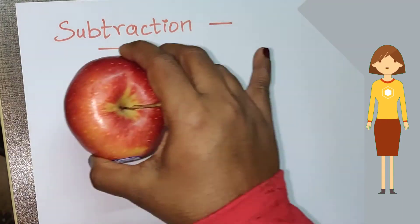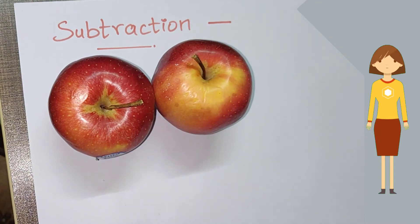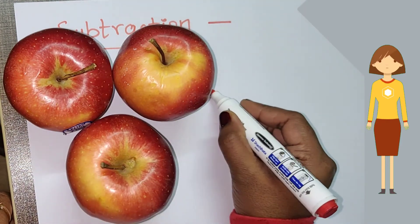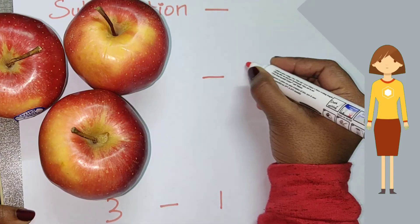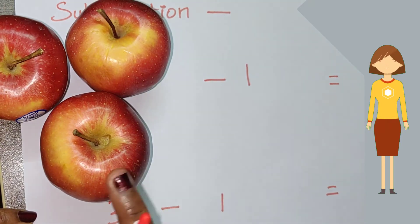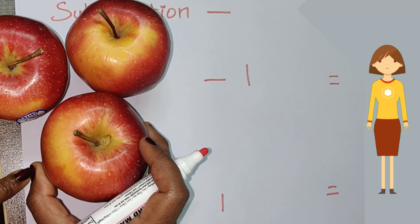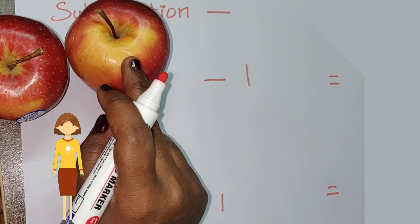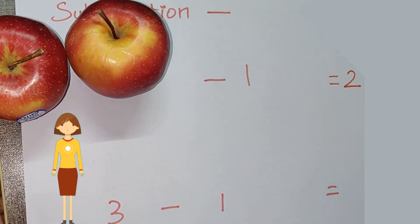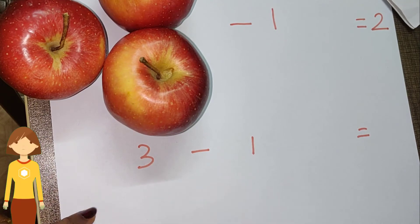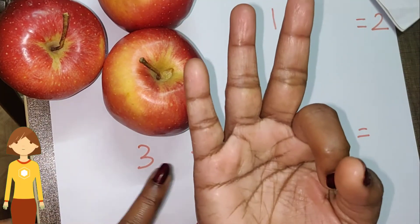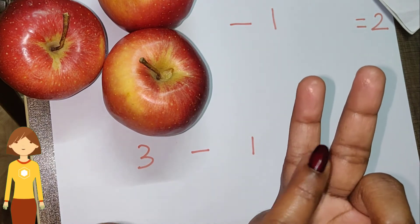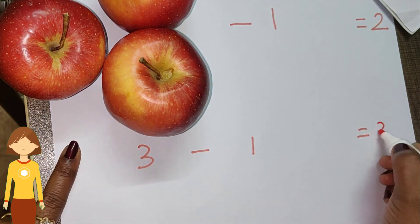Let me give an example. I am taking three apples — one, two, three. I have to minus one from that. If I take off one apple, how many apples are remaining? One, two. Only two apples are there, so the answer is two. The same way with fingers: I am closing one finger, and remaining fingers are one, two. So the answer is two.